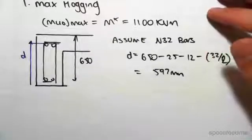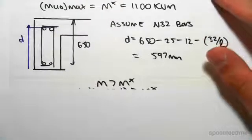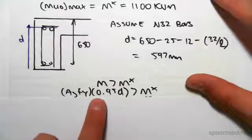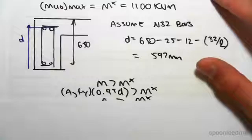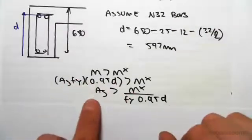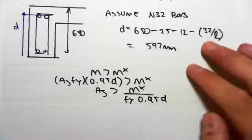We're then going to be using the design philosophy: M has to be greater than M star, where M is A_s f_y times 0.95d. Rearranging this for A_s, we get this formula here, dividing through by all this, keeping A_s on this side and subbing in for those values.